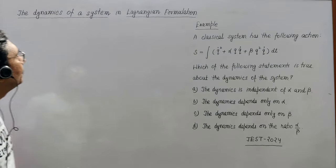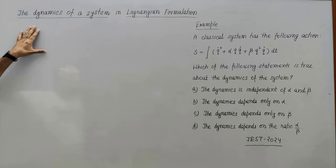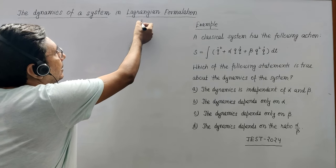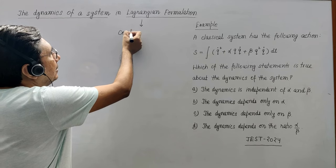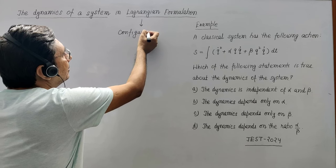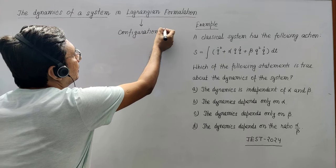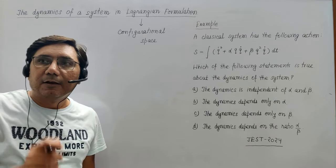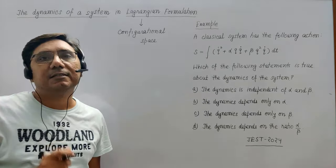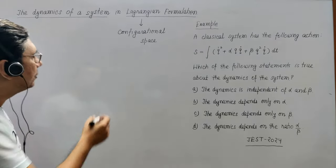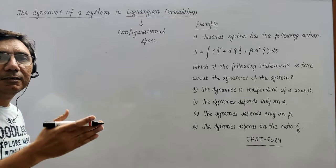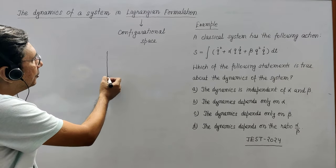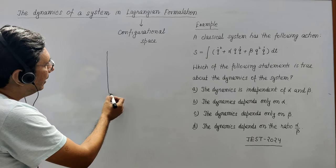Hello students. In this concept video I will discuss the dynamics of a system in Lagrangian formulation. Lagrangian formulation takes place in configurational space. Configurational space is an n-dimensional space where all the possible states of the system can be represented by a point. Suppose you are having generalized coordinates q1, q2, q3, and suppose n number of generalized coordinates are there. Then configurational space will be n-dimensional.